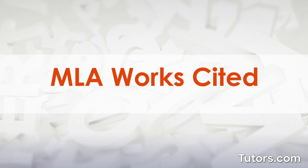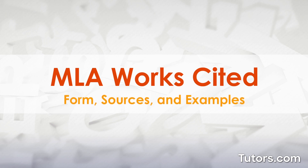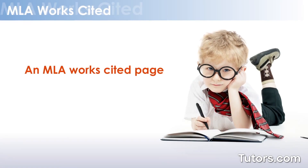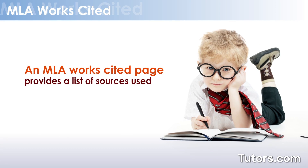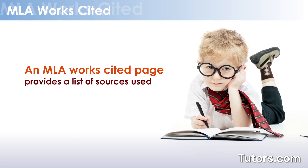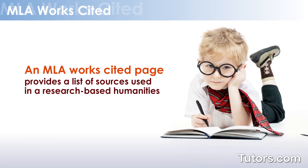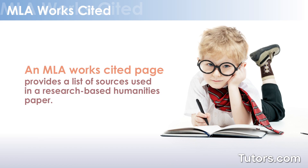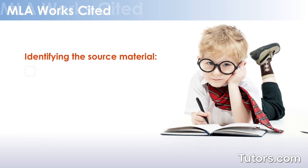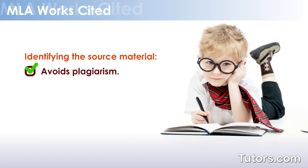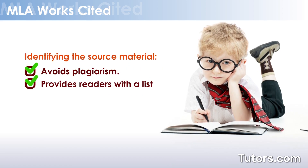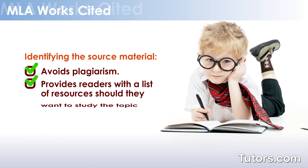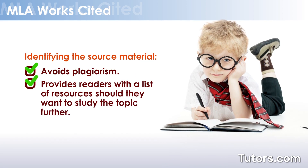An MLA Works Cited page provides a list of sources used in a research-based humanities paper. Identifying the source material avoids plagiarism and provides readers with a list of resources, should they want to study the topic further.